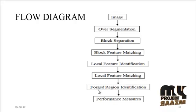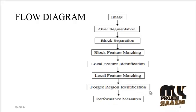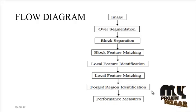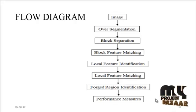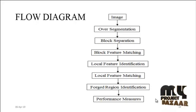After these steps, foreground region identification is performed. In this step, the foreground region — that is, the tampered regions — will be shown, and the other regions will be eliminated. Finally, performance measures are evaluated using parameters like precision, recall, and error measures. By these three parameters, we can determine whether our process is efficient or not.